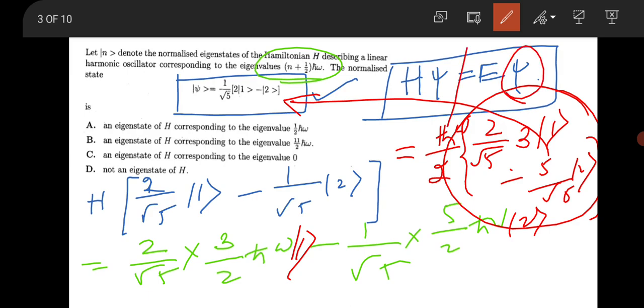The state it changes. This condition is not satisfied, so it will not be an eigenfunction of Hamiltonian. Option D will be correct because the condition is like whenever you operate something on a state, the state should remain unchanged with an eigenvalue. But here the eigenfunction gets changed. Here 3 is coming out and here 5 is coming out, it changes the eigenfunction.